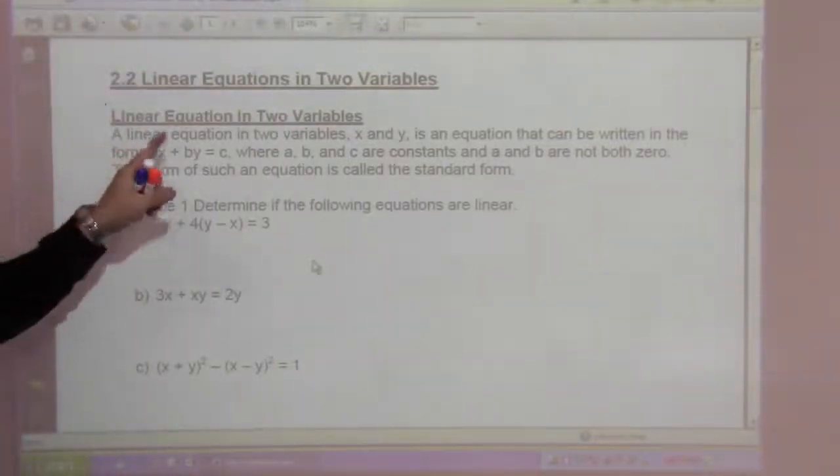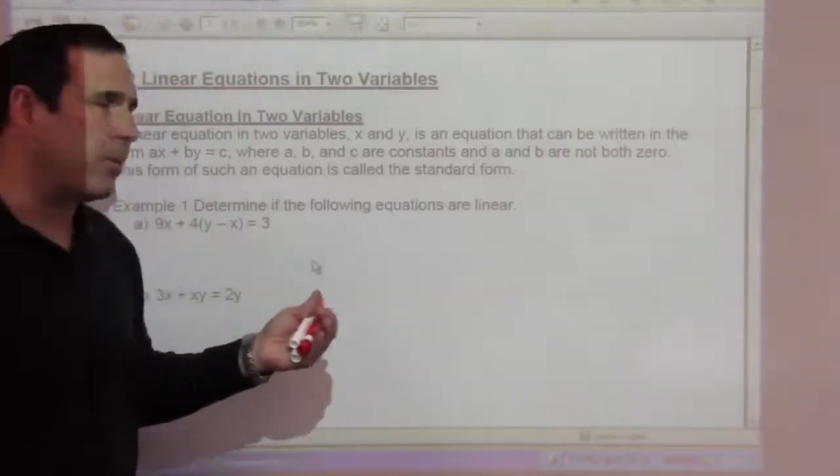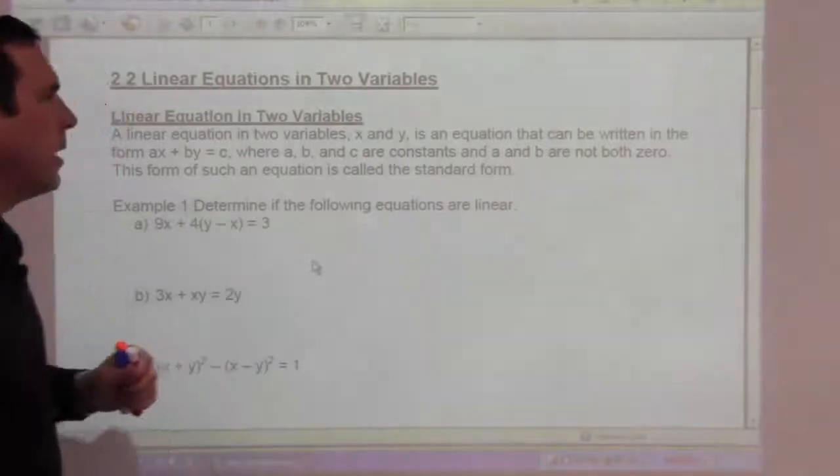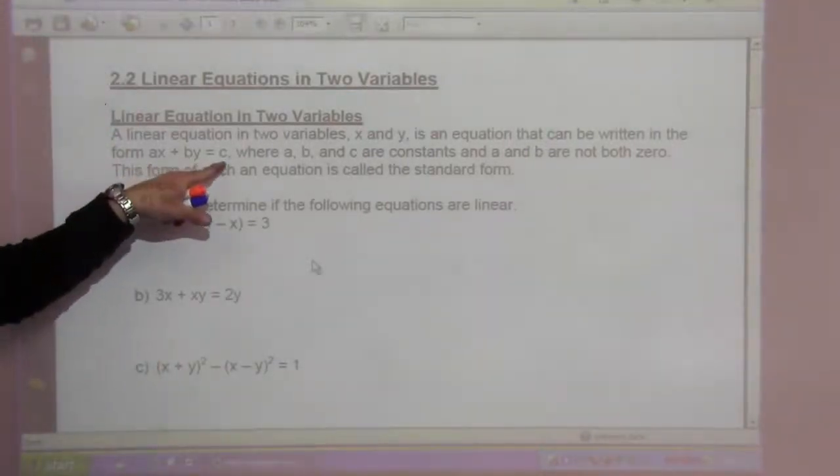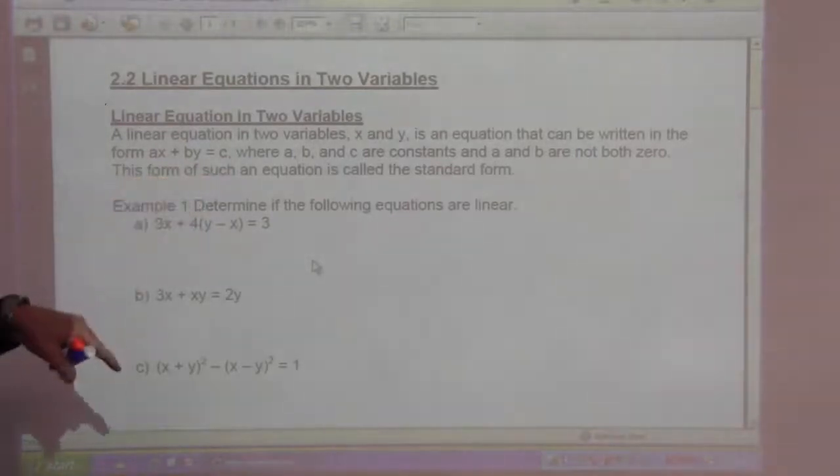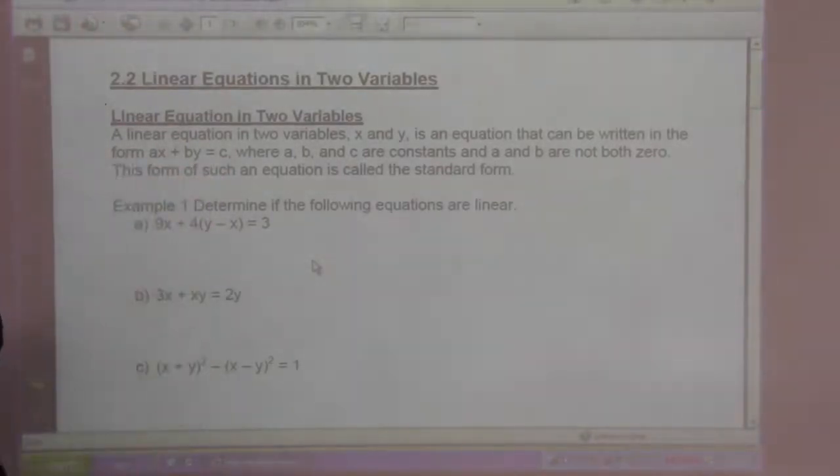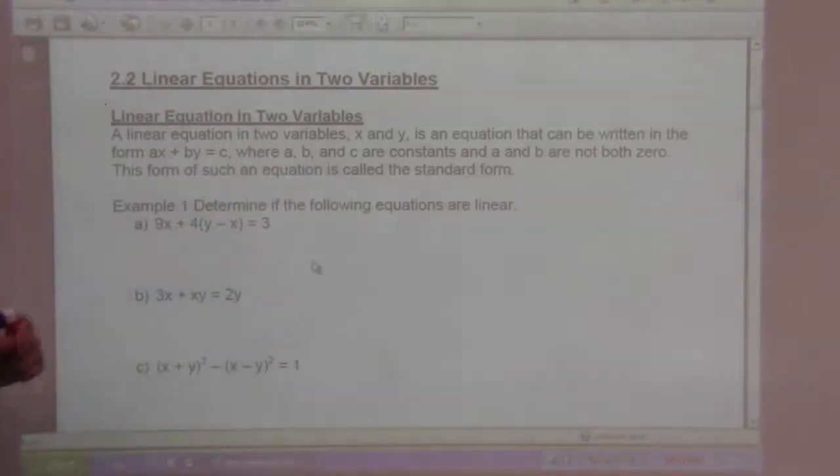A linear equation in two variables, x and y, is an equation that can be written in the form ax plus by equals c. This is the standard form. Where a, b, and c are constants and a and b are not both zero. This form of such an equation is called the standard form.